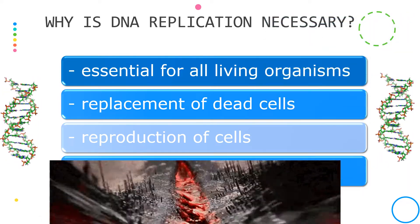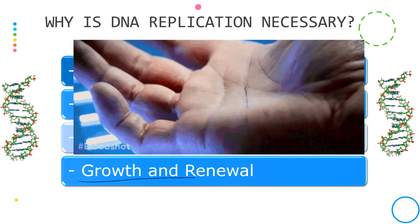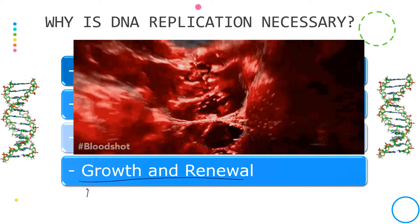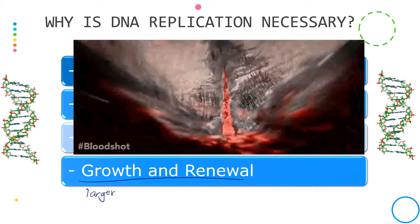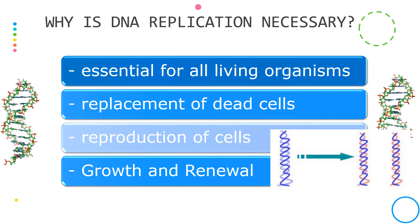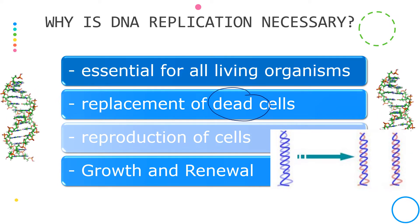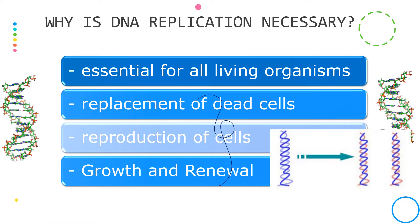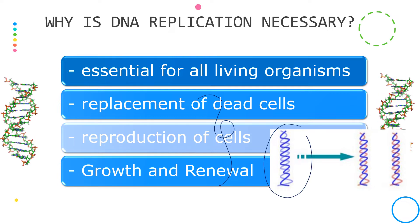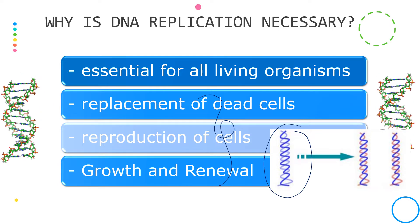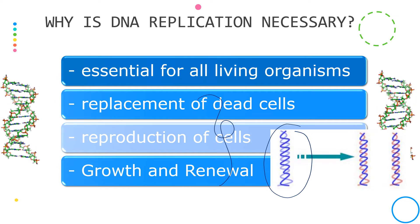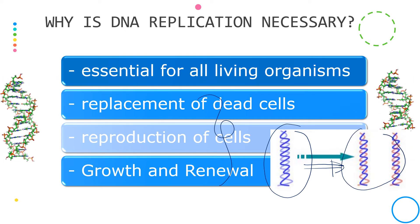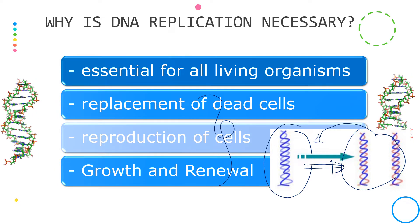DNA replication also plays an important role in the growth and renewal of cells. Growing organisms are constantly creating new cells as they develop into a larger body. Over time, these cells can become damaged, grow old, and die. To keep your body functioning properly, it is important that these cells are replaced quickly with new ones. To do this, we should first make a copy of the DNA, which has the genetic code needed to function properly. It is very important that DNA is replicated accurately, with new cells receiving an exact copy of the genetic sequence.